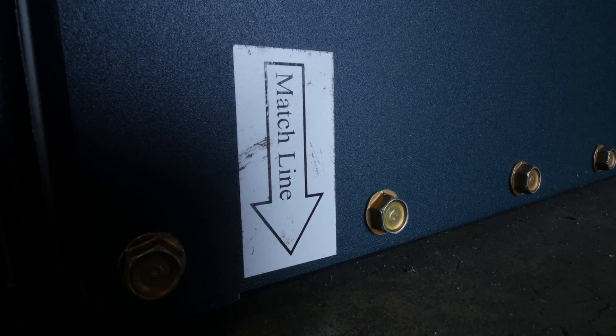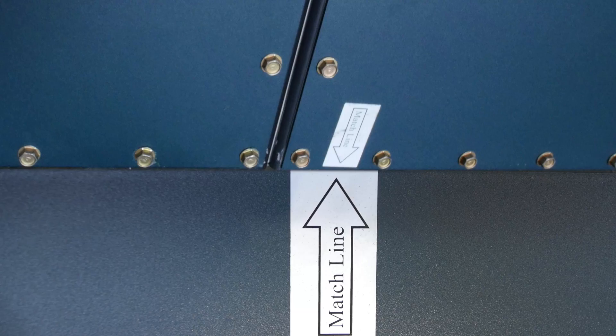The match line labels do not have to line up perfectly. They are intended only for general hopper to filter module orientation.